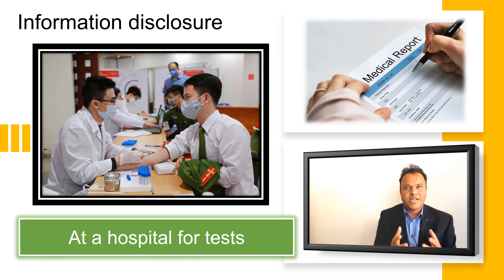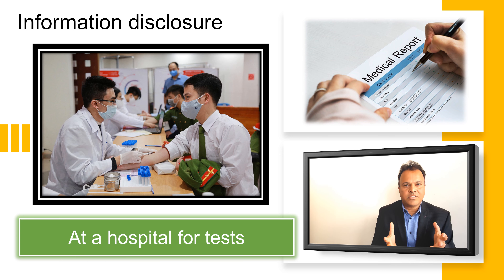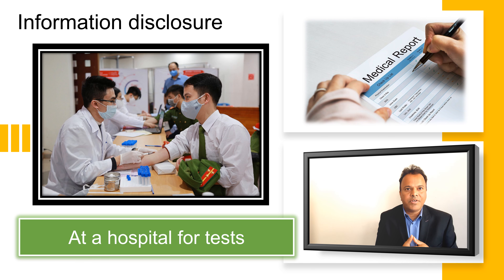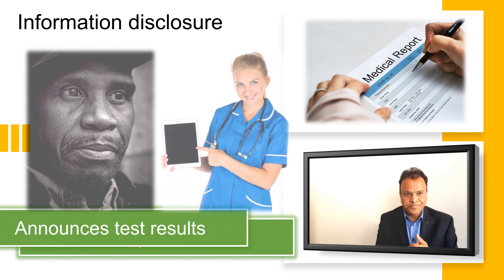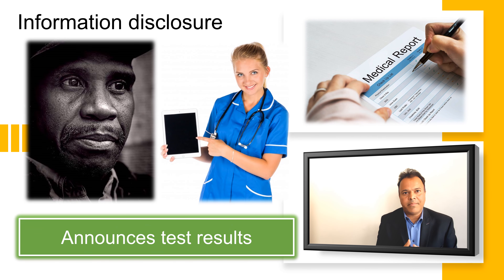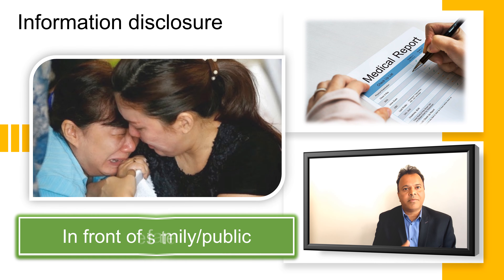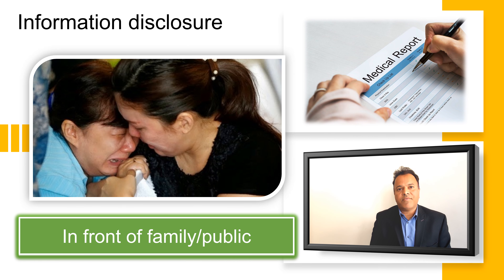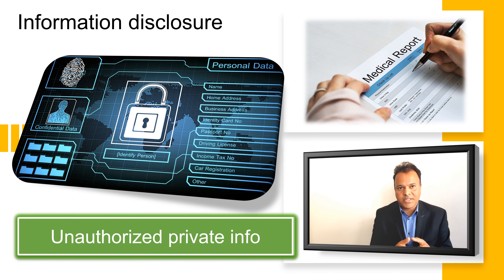A real-world example of information disclosure: imagine being in a doctor's office or hospital waiting for test results, and the doctor or paramedic comes out and announces in front of everyone — your family and friends — that you have lung cancer or prostate cancer. That is unwanted, unauthorized disclosure of confidential information to people who were not supposed to hear it.